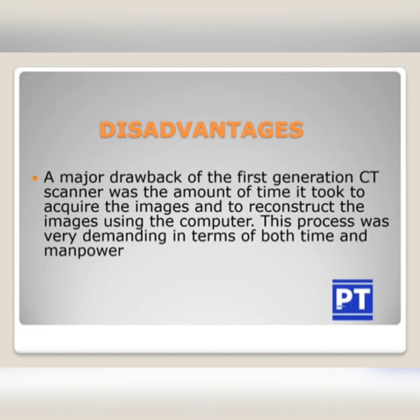The major disadvantage of the first generation CT was time. Since for a single scan it takes about 25 to 30 minutes, the major drawback was the amount of time it took to acquire and reconstruct the images using the computer. This process was very demanding in terms of both time and manpower.